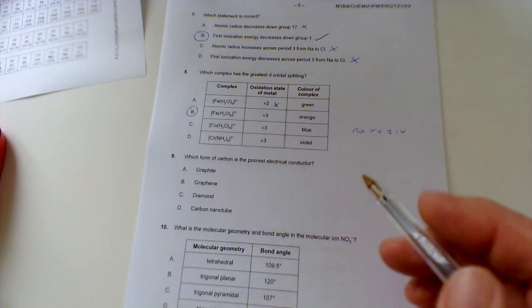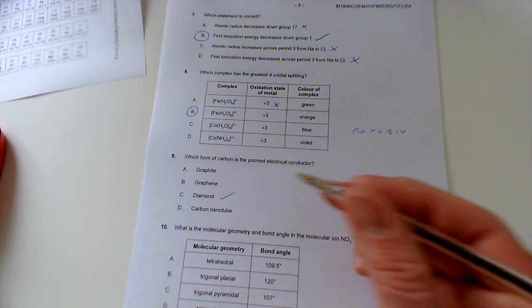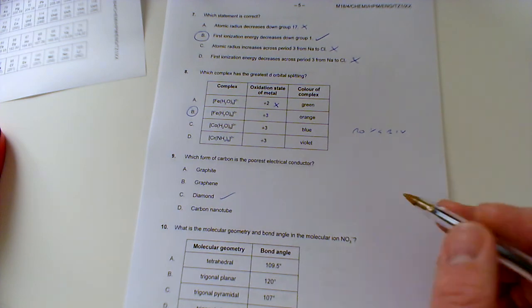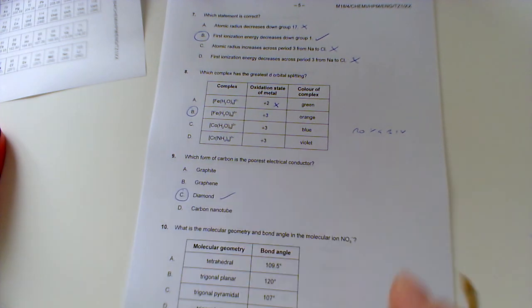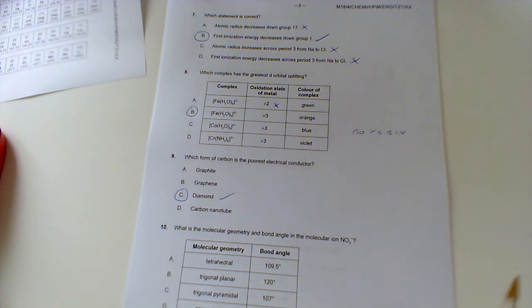Which form of carbon is the poorest electrical conductor? Graphite, graphene, diamond, carbon nanotube. Well, it's going to be diamond because it's got no delocalized electrons—it's four bonds per carbon, nice and easy. Whereas these guys have three bonds per carbon, which leaves them with one delocalized electron per carbon.